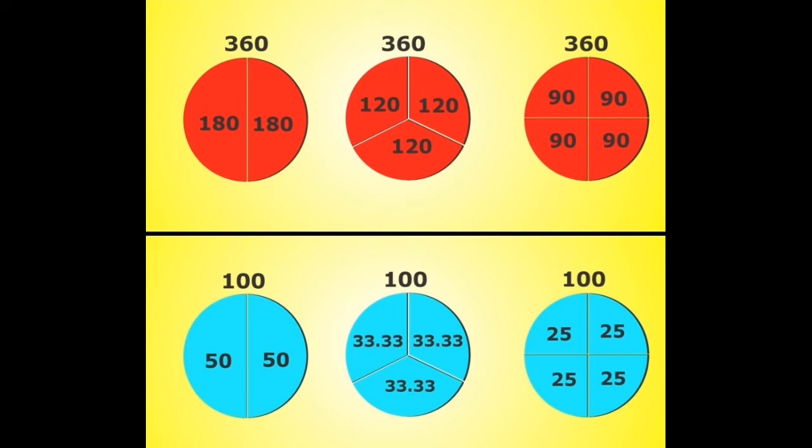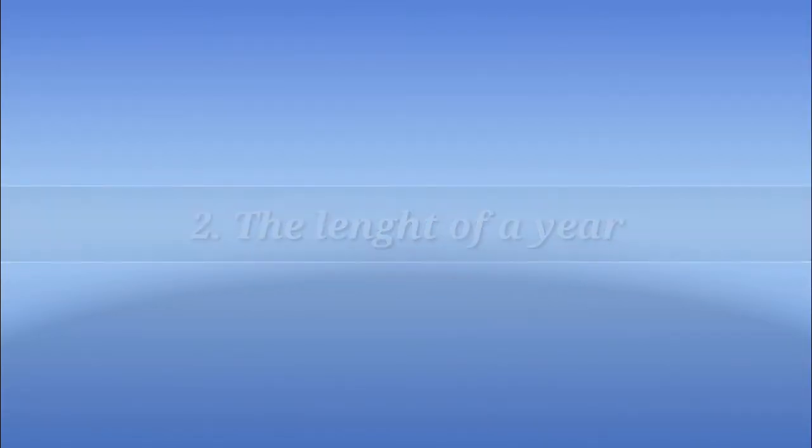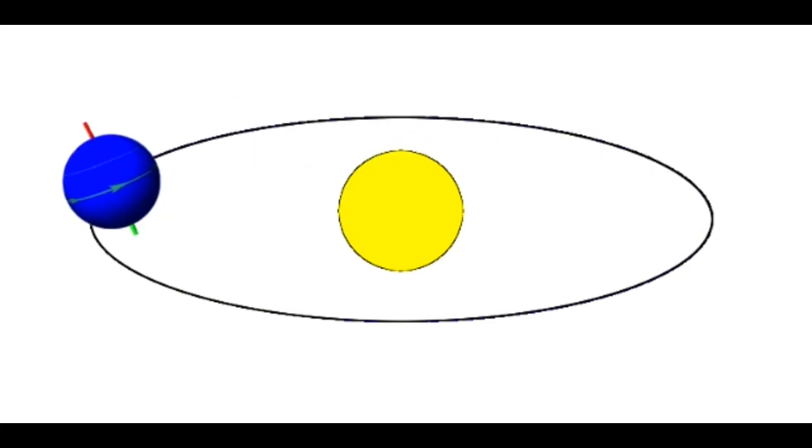360 can be divided into two, three, and four parts, and the resulting numbers are whole numbers: 180, 120, and 90. However, dividing 100 by 3 doesn't end in a whole number. Instead, it provides a decimal value of 33.3, which makes performing calculations difficult.